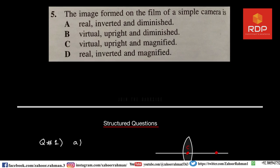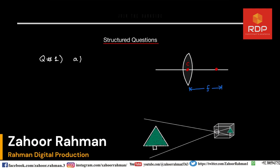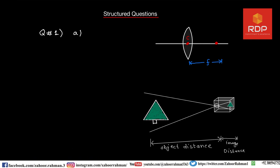Question five: the image formed on the film of a simple camera. Option A is the correct answer. The camera always provides a real, inverted, and diminished image. Remember these words — whenever a camera is concerned, the image will be real, inverted, and diminished. We discussed this in detail in the previous lecture.